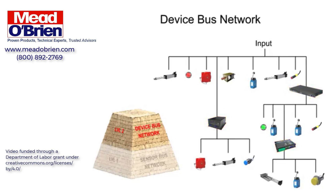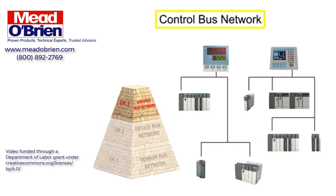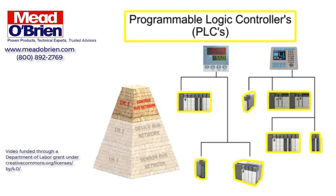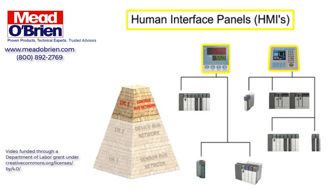Moving up the pyramid, the next increasingly complex level of field bus networking is the control bus network. Control bus networks are the most advanced networks used on the factory floor, and data communication happens at a high level. PLCs, or Programmable Logic Controllers, are connected to each other alongside HMIs, or Human Interface Panels, to allow for complete configuration and control of every instrument on the network.